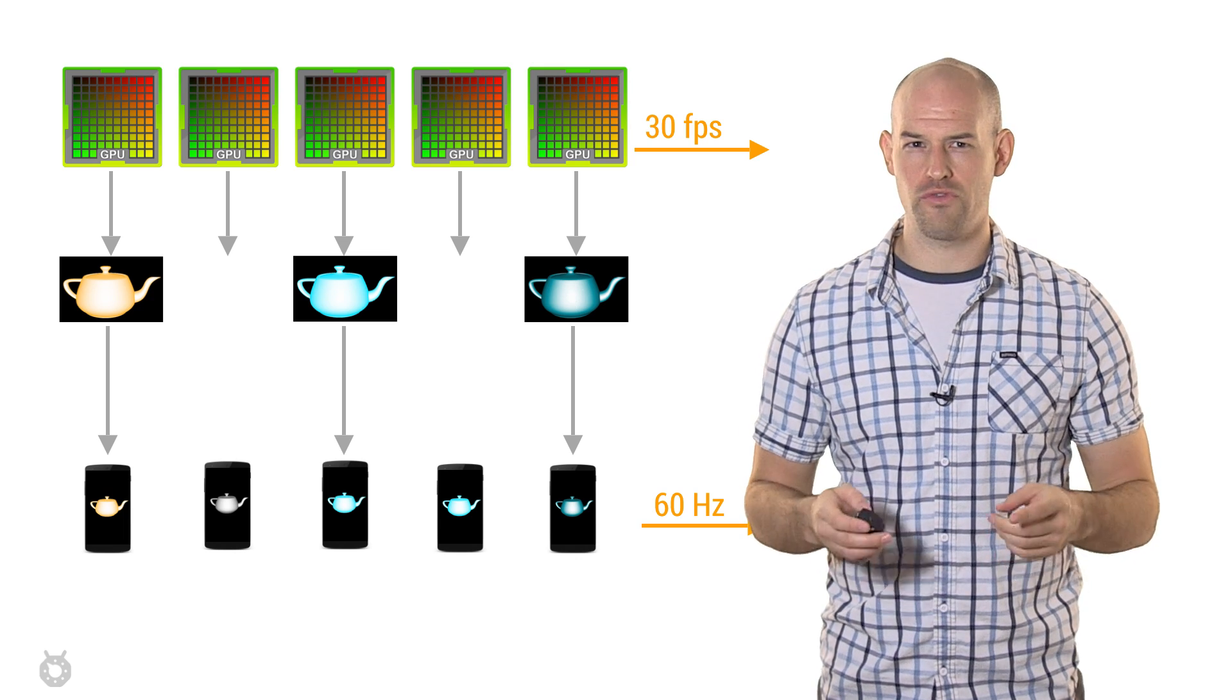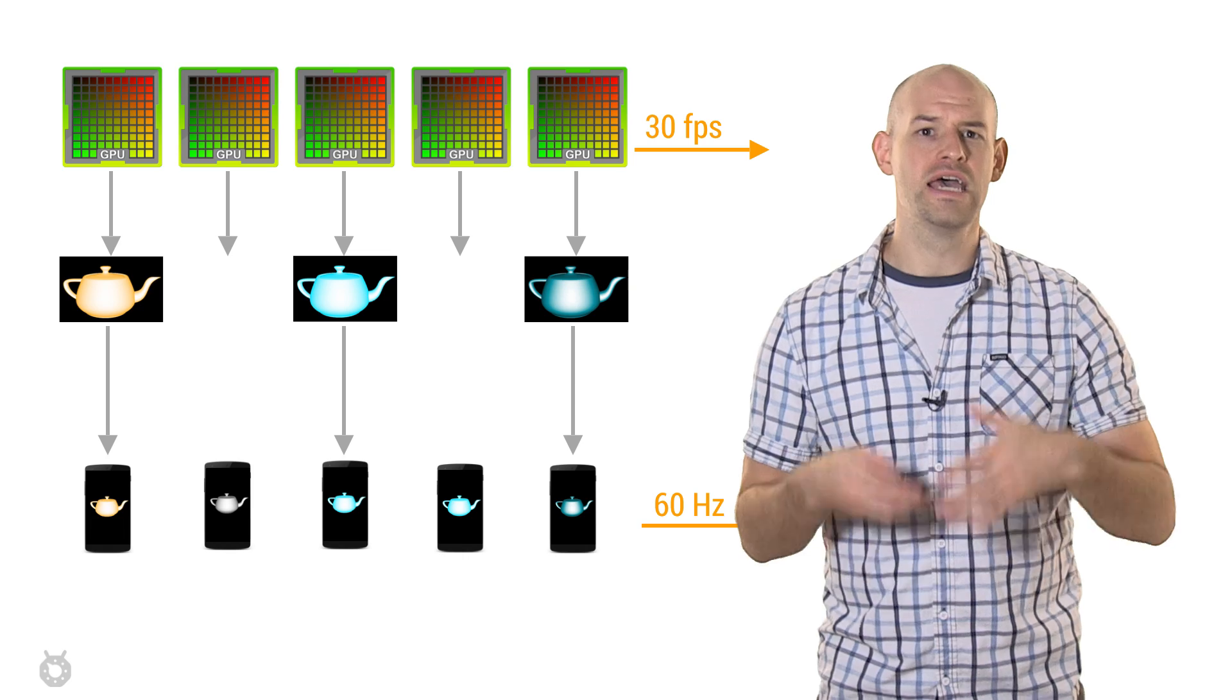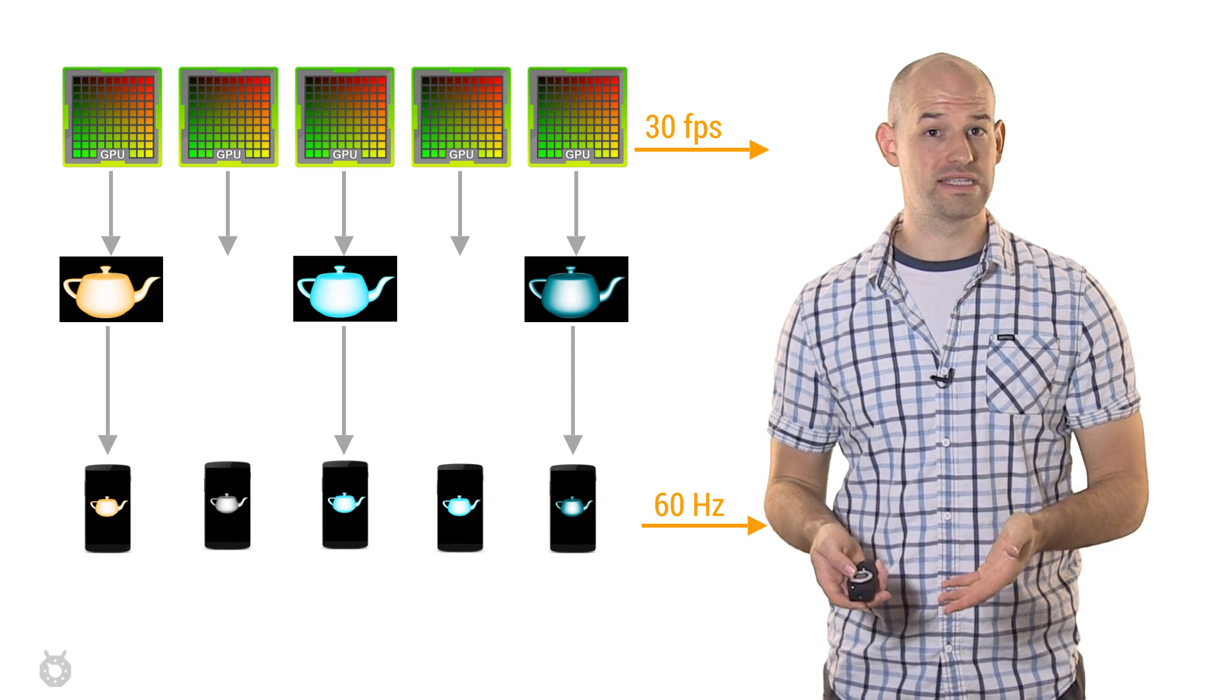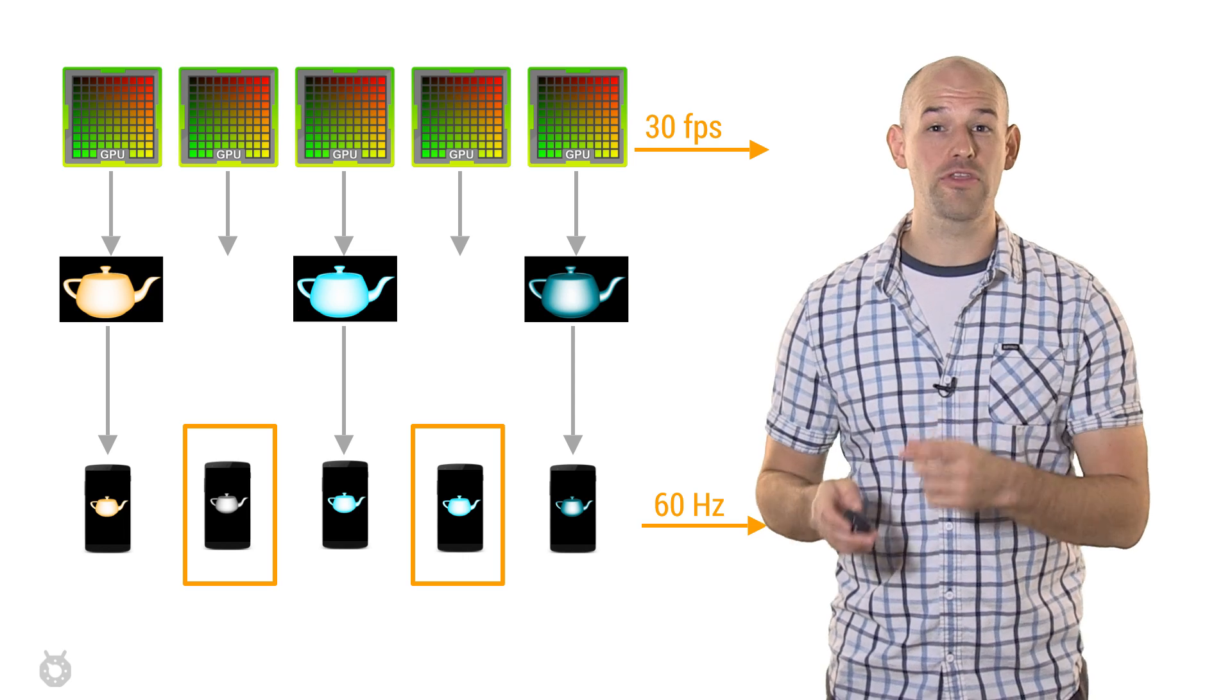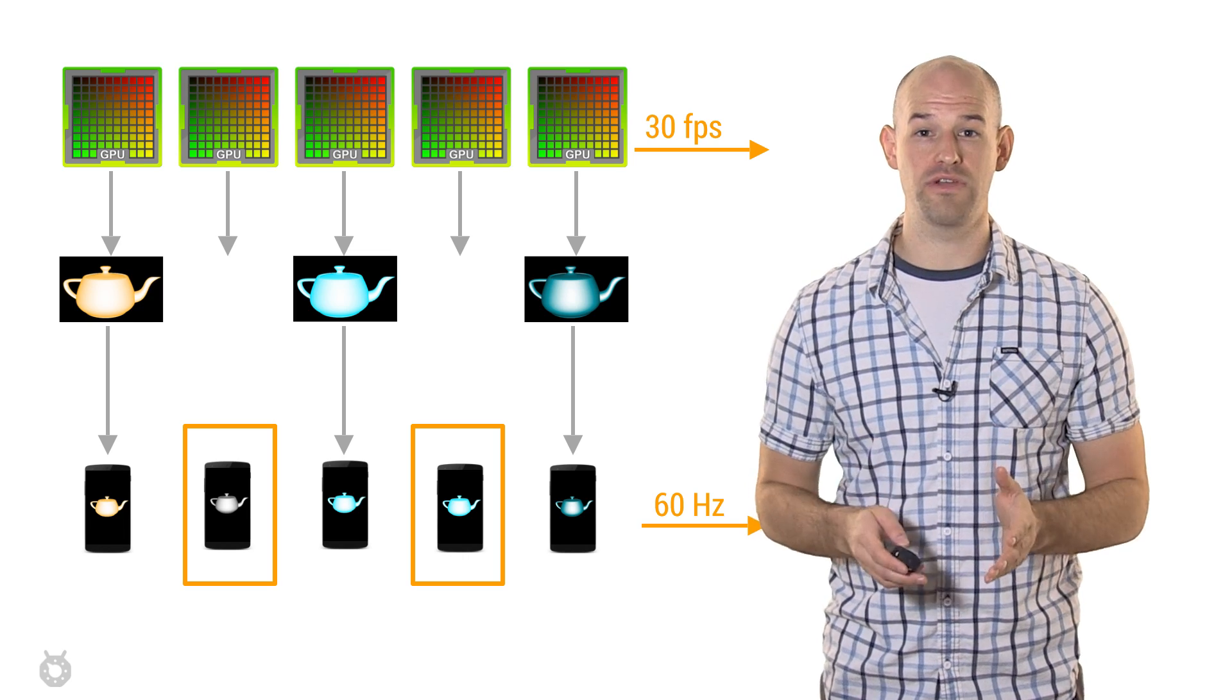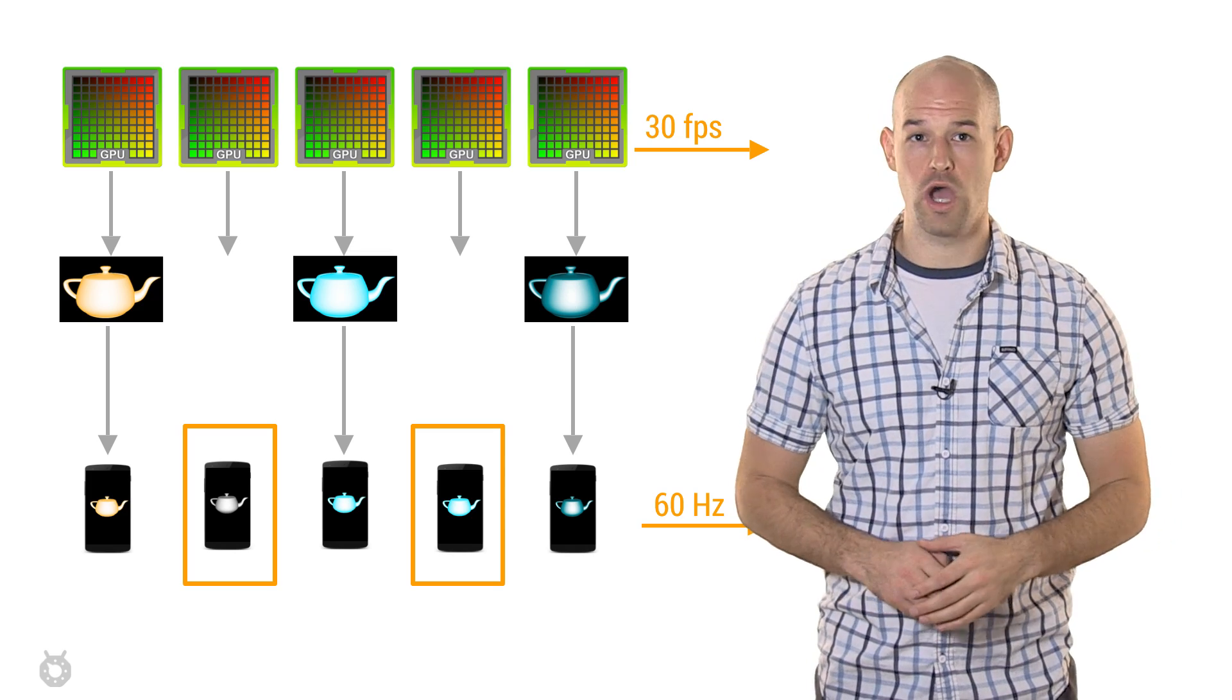But what happens if your screen is refreshing twice as fast as your GPU is drawing? For example, the GPU is only outputting 30 frames a second, but the screen is actually refreshing at 60 hertz. This means that every other refresh will be sampling from the same frame, or rather the screen will be displaying the same GPU frame twice in a row.